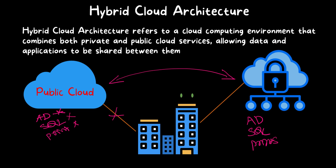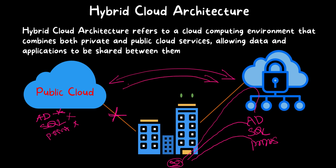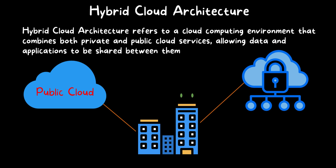So if the public cloud is not available or goes down, users can still authenticate using the Active Directory in the private cloud, access the database from the private cloud, and print using the print server in the private cloud. This copy stays up to date through two-way synchronization between the public and private cloud. On the other hand, if the private cloud goes down, users can still use services from the public cloud. If both go down simultaneously, that is a very rare situation — 99.9% of the time, at least one will be running.